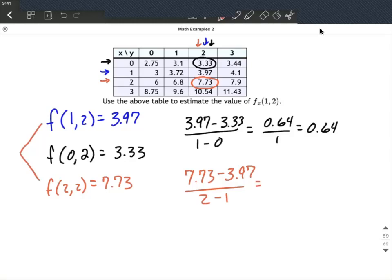Now, as we work this out, we get 3.76 divided by 1, or 3.76. All right, both of these are estimations, but we could probably get a better estimation if we took the average between these two.